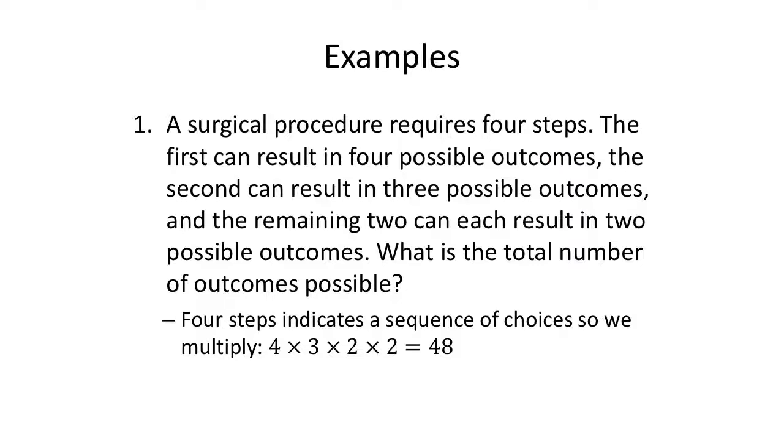Because it's an and then, steps, sequence of choices, we're going to multiply. The first one results in four possible outcomes. The second can result in three possible outcomes. And the remaining two, each in two. So two times two. Four times three is 12, times two is 24, times two, 48 different ways that this surgical procedure could come out, depending on which outcome from each of the steps we have.